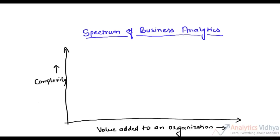Let's try to understand the spectrum of business analytics through a graph. On the horizontal axis, I have the business value added through analysis. On the vertical axis, I have the complexity of analysis.